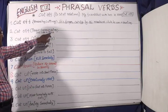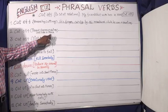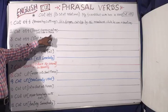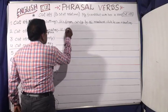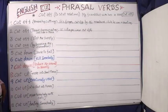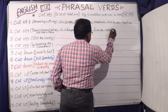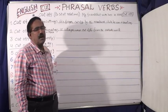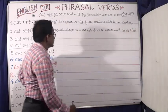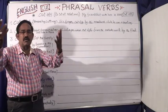Another meaning of 'cut off' is to prevent communicating outside a place. For example: Ten villages were cut off from the outside world by the flood. Here 'cut off' means to prevent communication with the outside world.